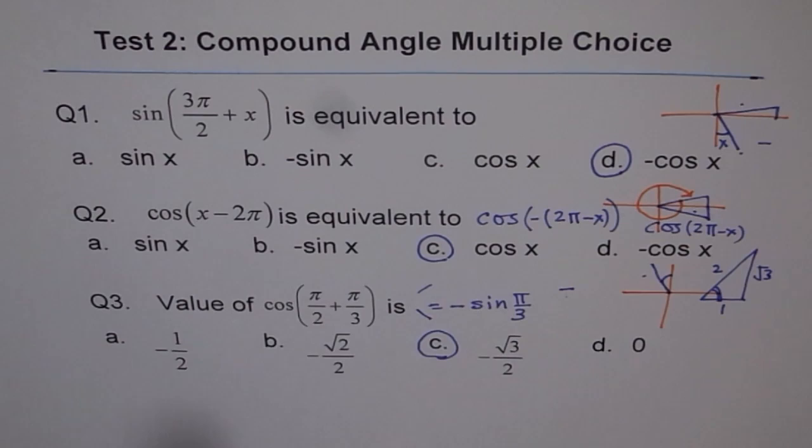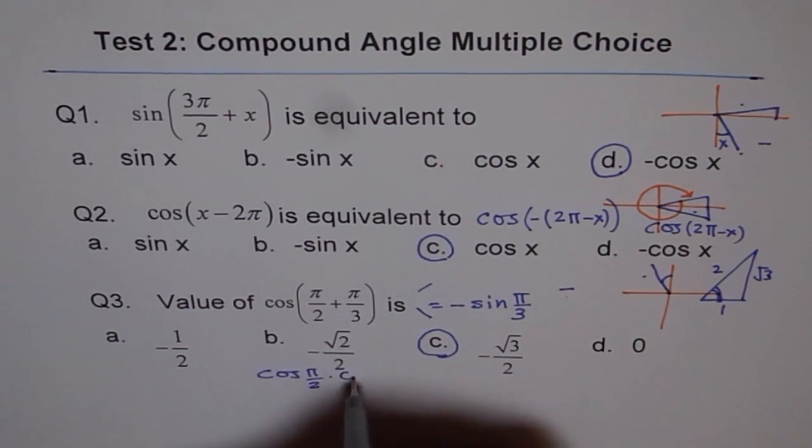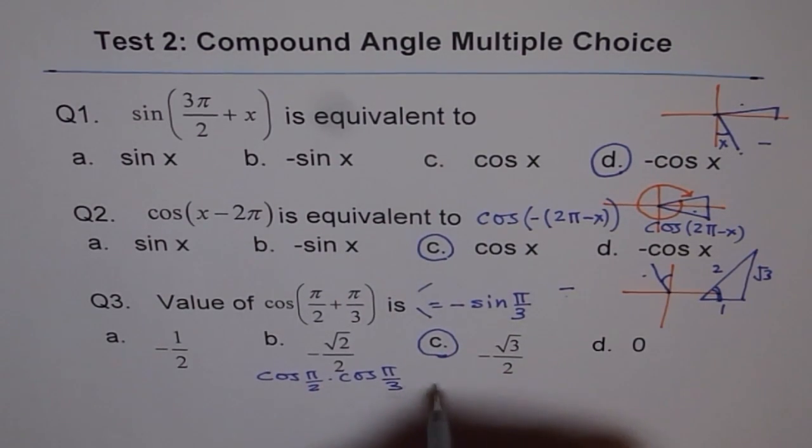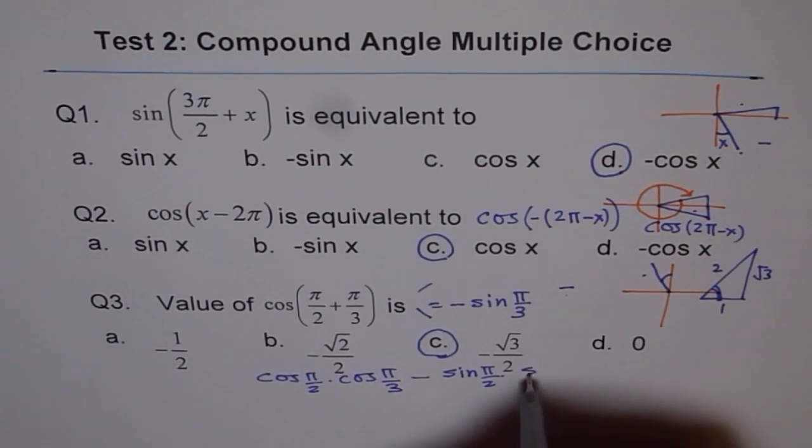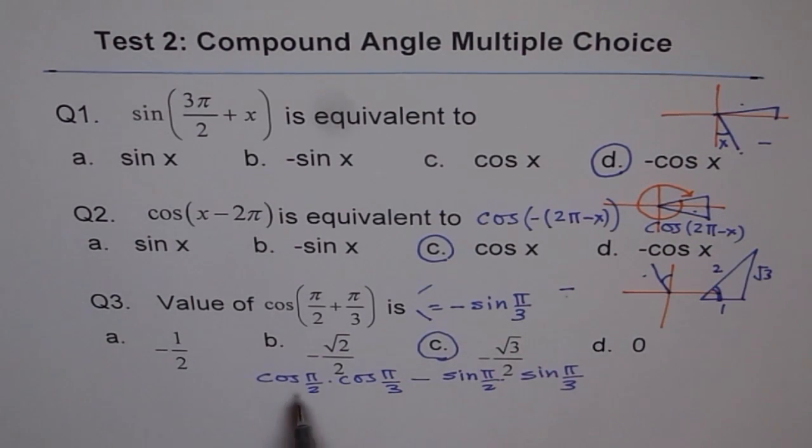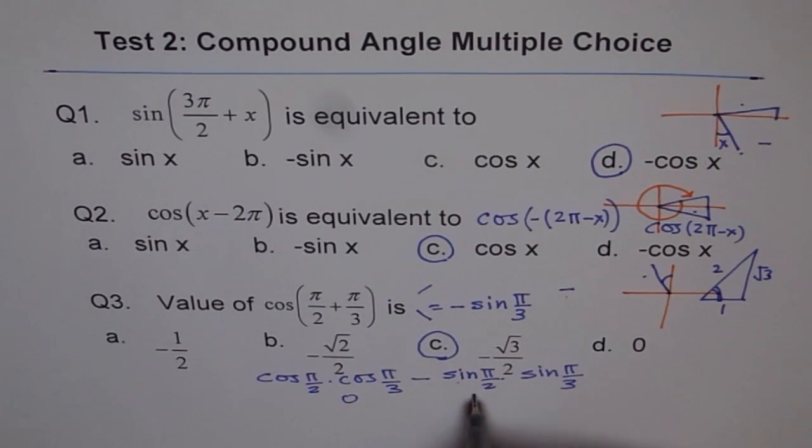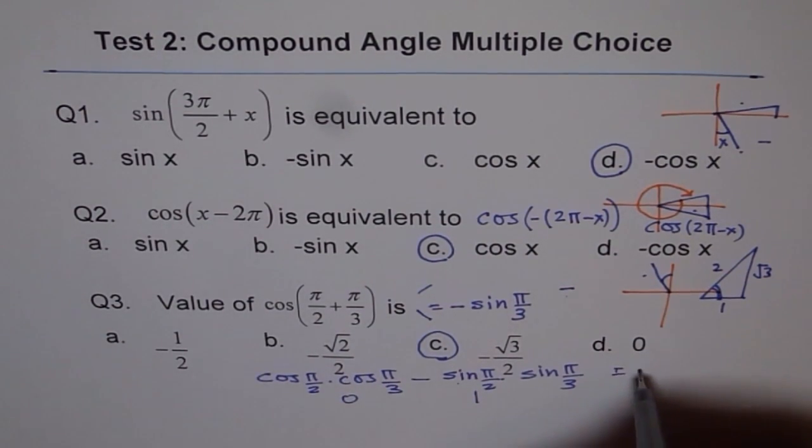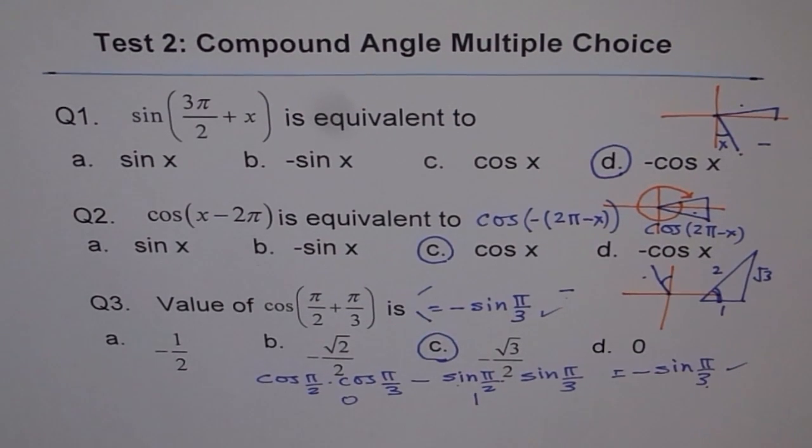Also, practice with expanding it. In that case, it will be cos of π/2 times cos of π/3 minus sin of π/2 times sin of π/3. That is an alternate method. Now, you know cos of π/2 is 0. So the first term is 0. And the second term is sin of π/2 is 1. So this is equal to minus sin π/3. And that is also, we get the same answer. Do you see that? Thank you.